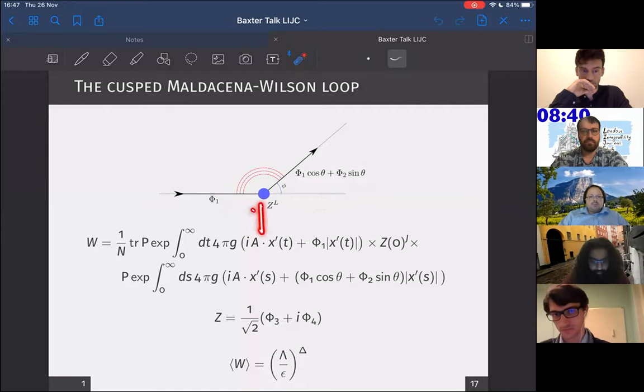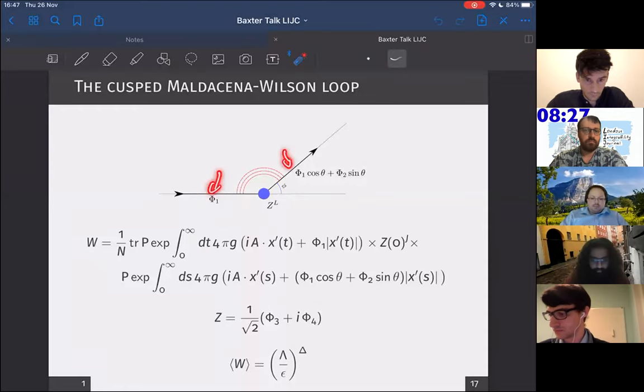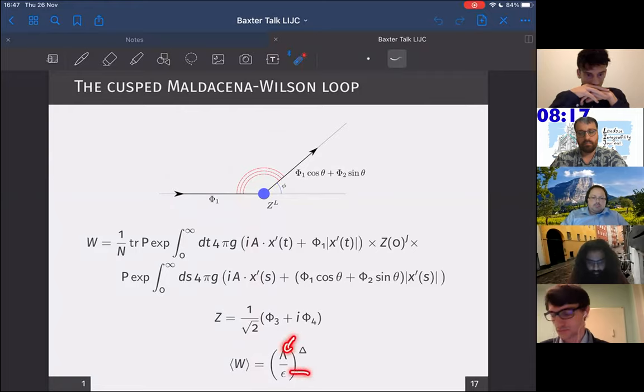Additionally, I can make some scalar insertions at the cusp. I insert L scalars Z, and these scalars are what I would call orthogonal insertions, or insertions of scalars which are orthogonal to the ones that coupled to the line. This general setup on its own diverges in the following way, where this is the IR cutoff, this is the UV cutoff, and delta represents the scaling dimension.